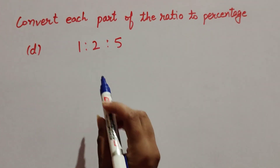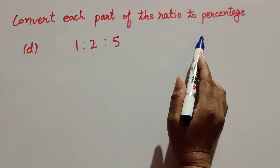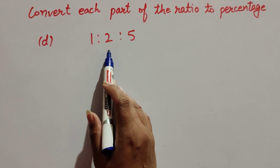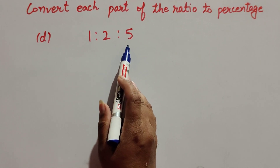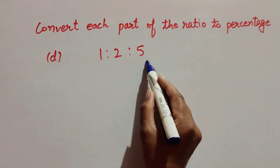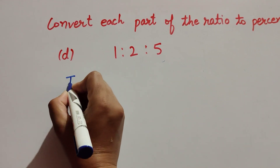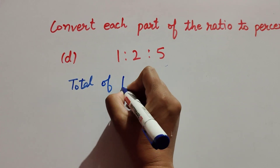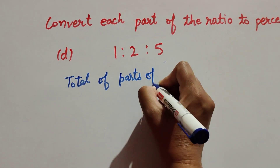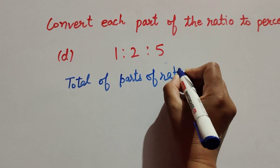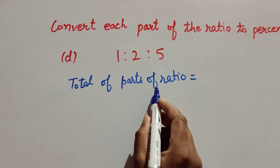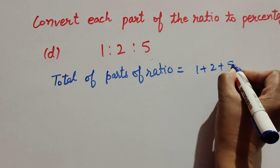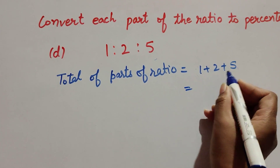Hello friends, welcome to my channel. In this video we discuss how to convert each part of a ratio to percentage. The ratio is 1:2:5. To convert each part of this ratio into percentage, first we find the total of parts of the ratio, which is equal to the sum of all parts — one plus two plus five — and it is equal to eight.